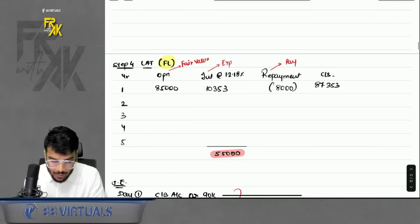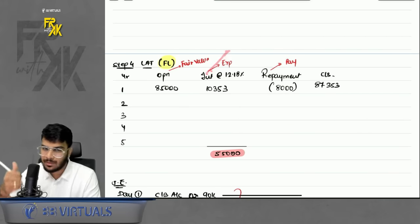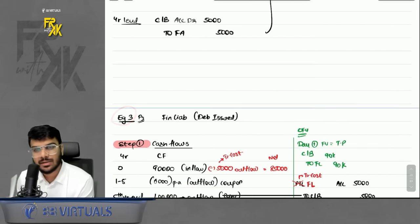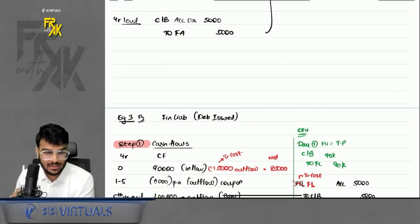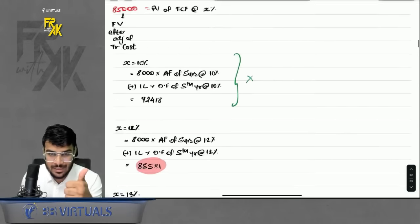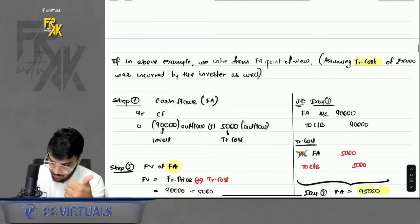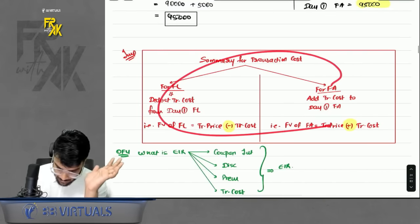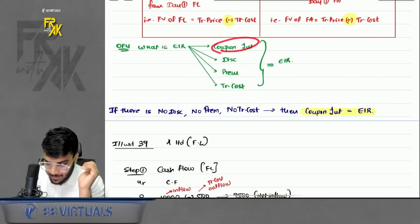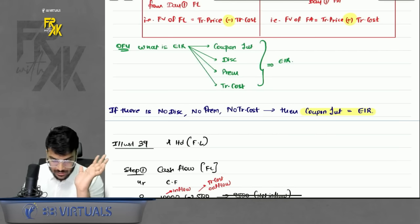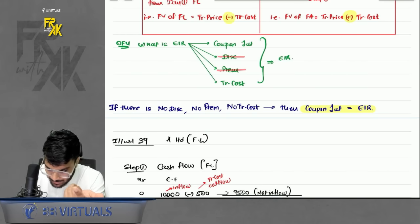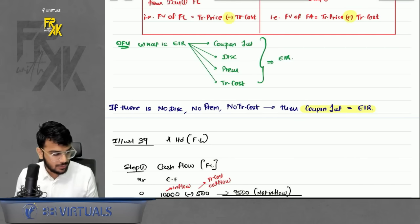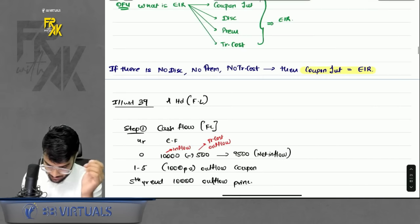Accordingly, prepare the LAT using 85,000 as the opening value. The interest calculated will include your coupon, premium, discount, and transaction cost all combined. The summary: for financial liability, less transaction cost on day one; for financial asset, add transaction cost on day one. EIR is the combination of coupon interest, discount, premium, and transaction cost — that is the effective interest rate.